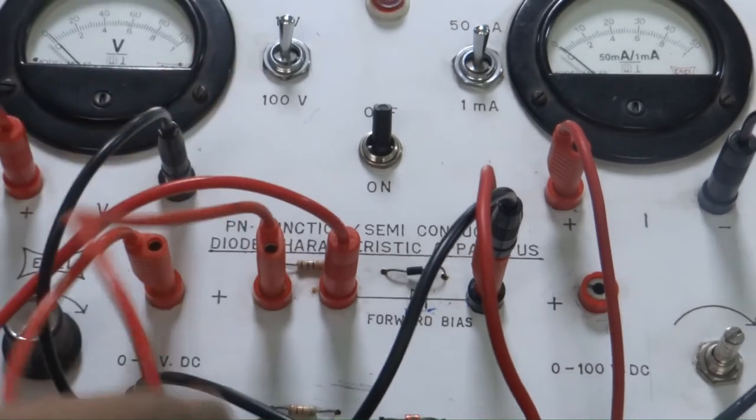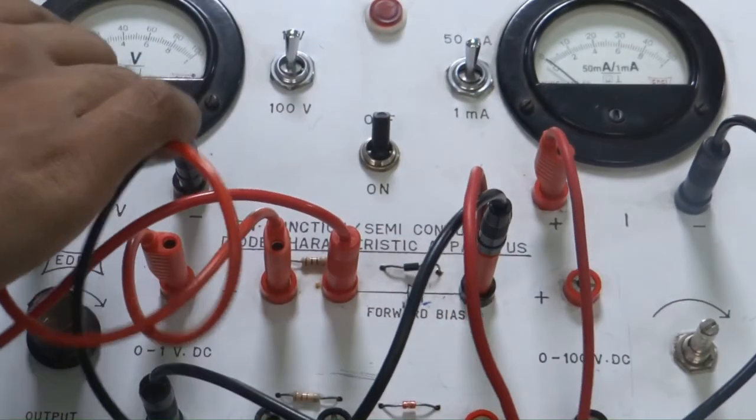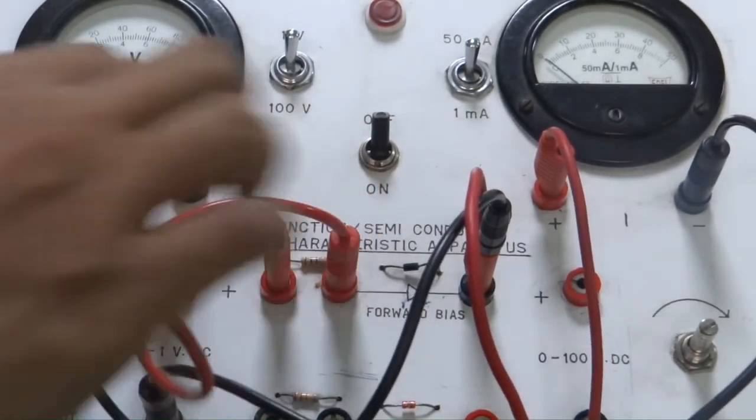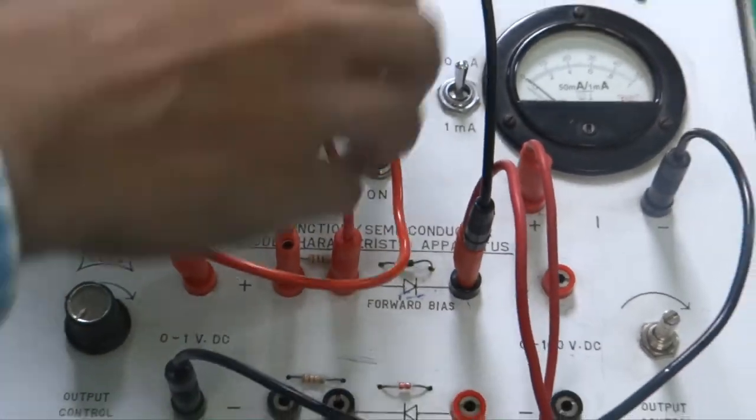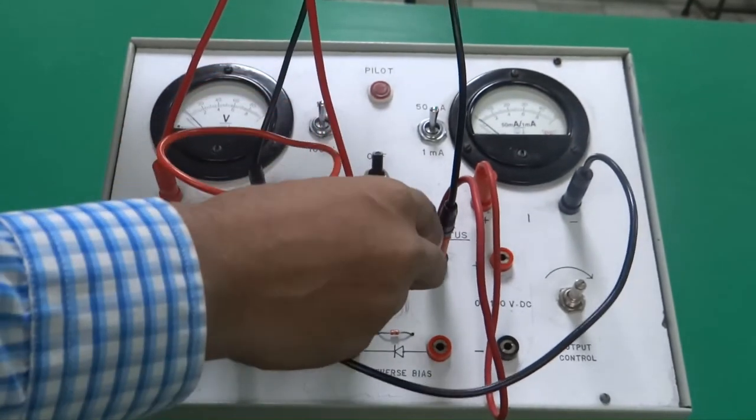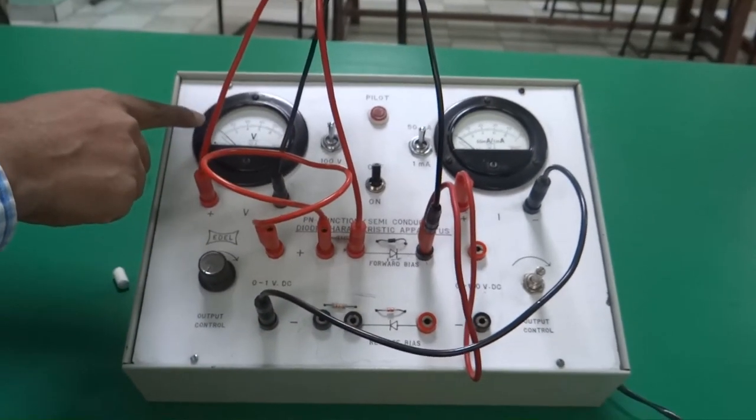You can see over here. Then we will connect the voltmeter in parallel to the diode. So you can see that the black wire and the red wire. We have connected the diode and the voltmeter in parallel.